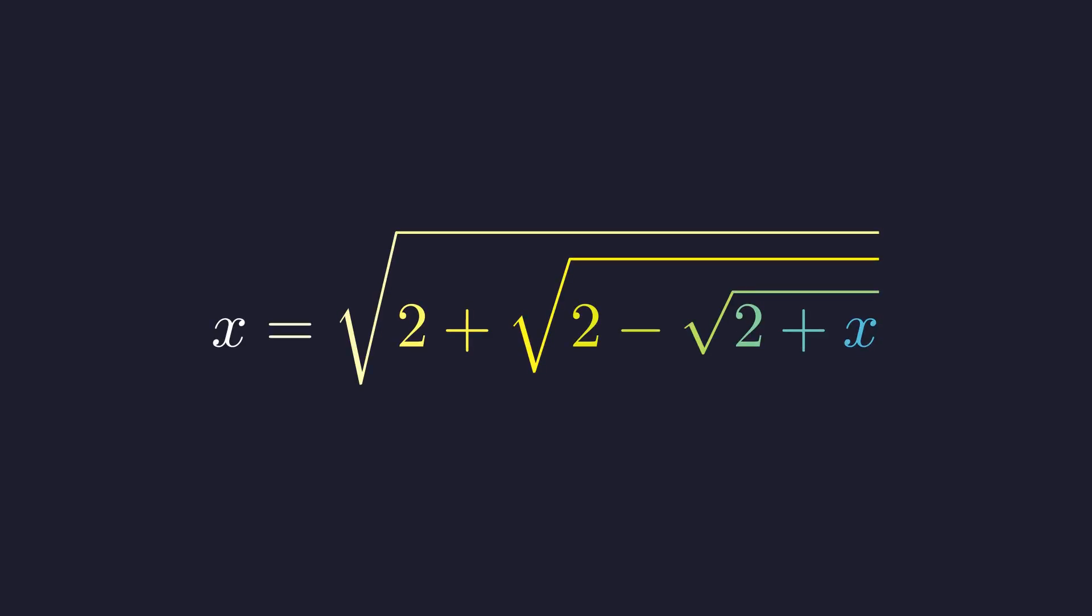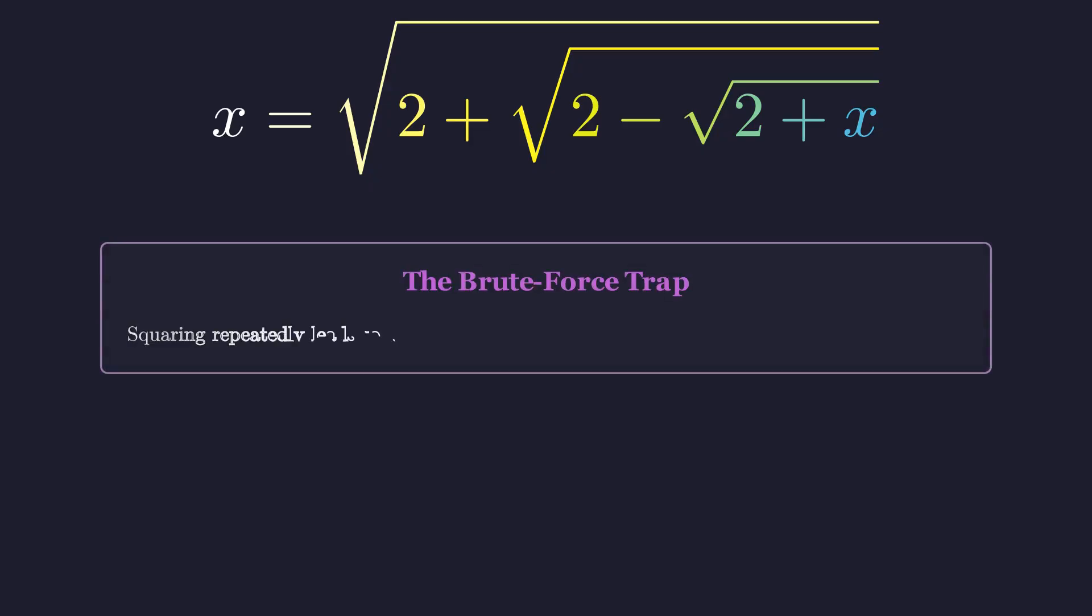This is a banger of a question. At first glance, this deeply nested radical looks almost impossible to solve, but its solution is one of the most elegant pieces of high school mathematics I've ever seen. Our first instinct might be to square both sides repeatedly to eliminate the radicals.